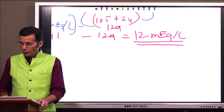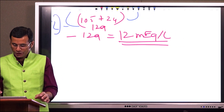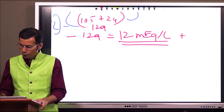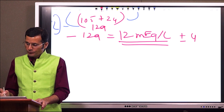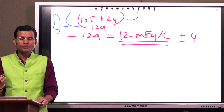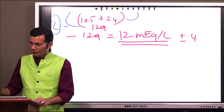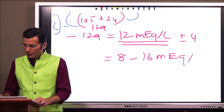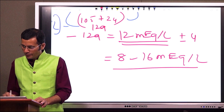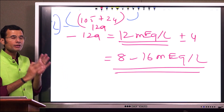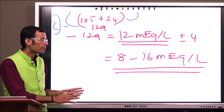If we now include potassium (4 mEq/L), the normal serum anion gap becomes 12 ± 4, giving a range of 8 to 16 mEq/L. This is the normal serum anion gap.